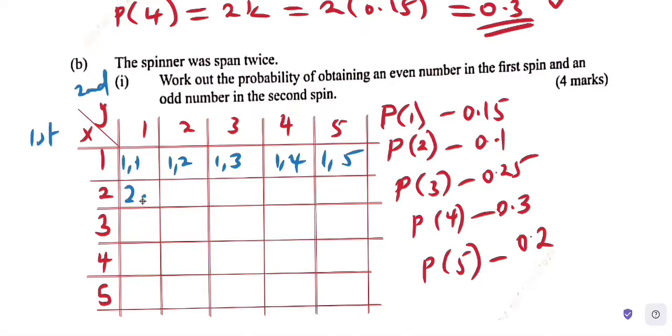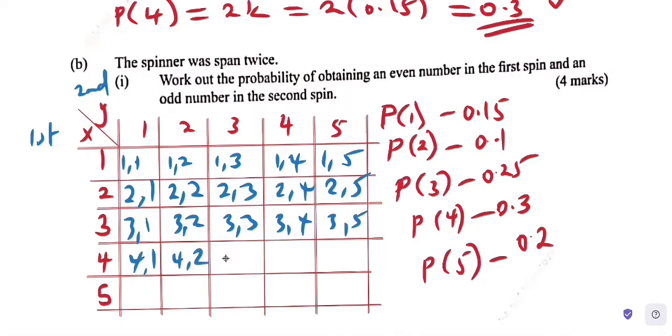Filling in the table: first row is 1,1 then 1,2, 1,3, 1,4, 1,5. Second row: 2,1 then 2,2, 2,3, 2,4, 2,5. Third row: 3,1, 3,2, 3,3, 3,4, 3,5. Fourth row: 4,1, 4,2, 4,3, 4,4, 4,5. Same thing for fifth row: 5,1, 5,2, 5,3, 5,4, 5,5.